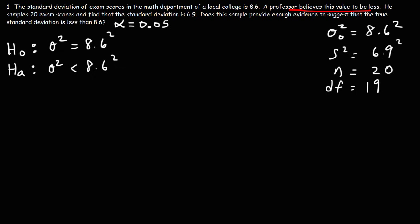Now we need to determine what type of test we have. If it's a left-tail test, a right-tail test, or a two-tail test, what would you say? Looking at the alternative hypothesis, because the professor believes the value to be less, this is going to be a left-tail test.